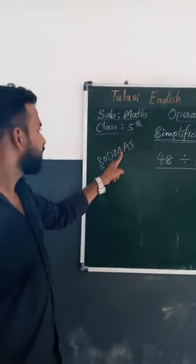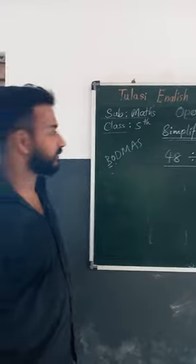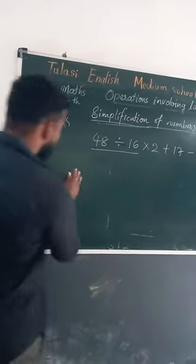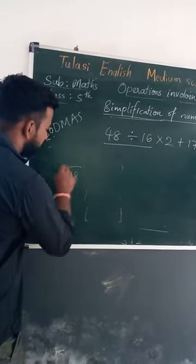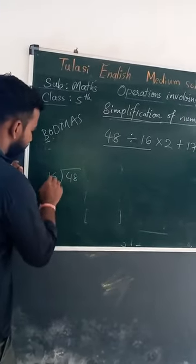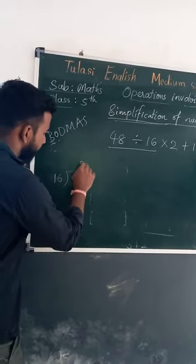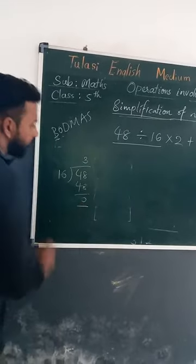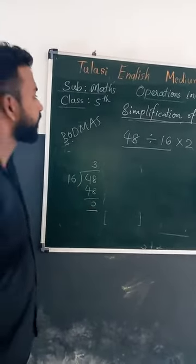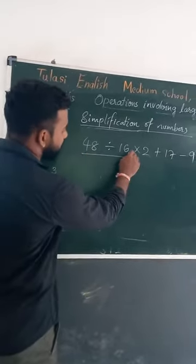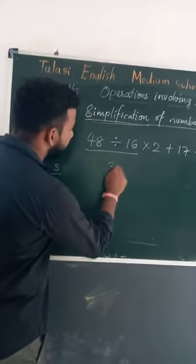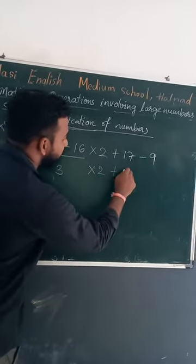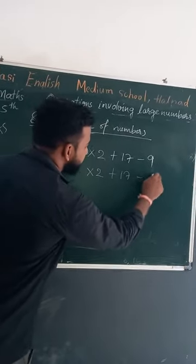Division comes first before multiplication. 48 divided by 16 equals 3. Write the remaining as it is: into 2, plus 17, minus 9. Next is multiplication: 3 into 2 equals 6. Write the remaining as it is: 6 plus 17 minus 9.